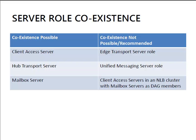Co-existence is not possible — or not recommended — in the case of the Edge Transport Server role; that must be installed on a dedicated server of its own. The Unified Messaging Server role can co-exist with Client Access, Hub Transport, and Mailbox servers, but it's typically not recommended because Unified Messaging is a very processor-intensive role due to the amount of audio processing required to record voicemails. As a caveat to combining Client Access and Mailbox servers, you cannot combine Client Access servers in an NLB cluster — a network load balancing cluster — with Mailbox servers that are also members of a DAG, which is a database availability group.